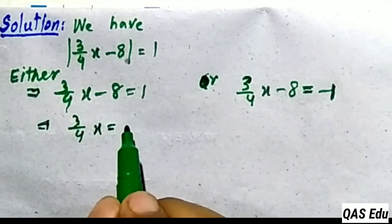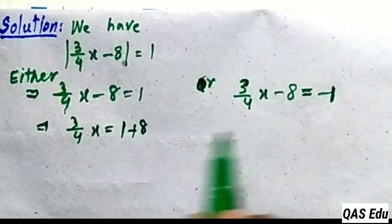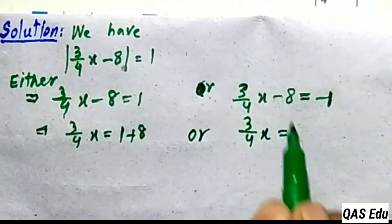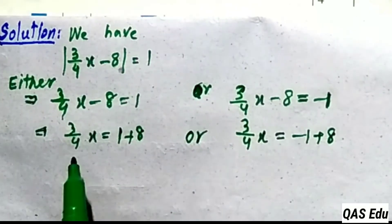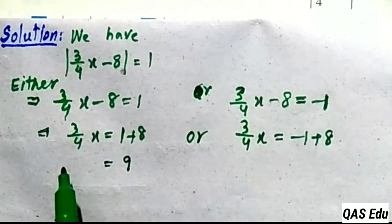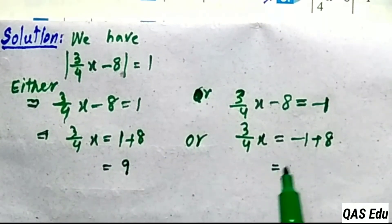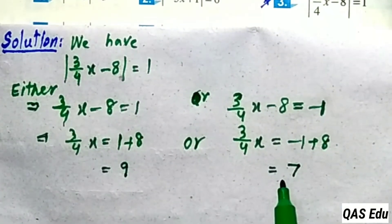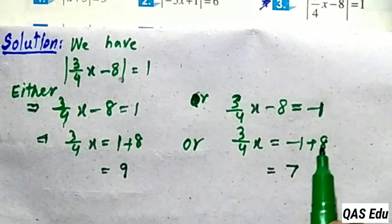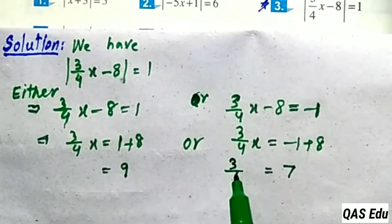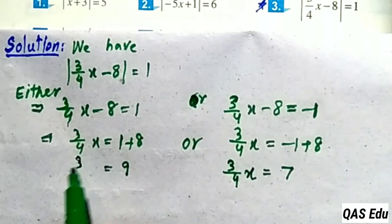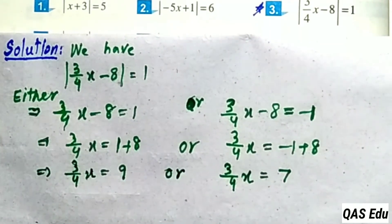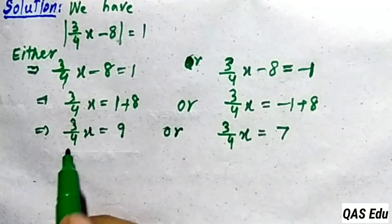Move minus 8 to the right-hand side as plus 8. So 1 plus 8 gives 9. For the second equation: minus 1 plus 8. Minus plus gives minus, so 8 minus 1 gives 7. Both equations now have 3 over 4x: one equal to 9, the other to 7.